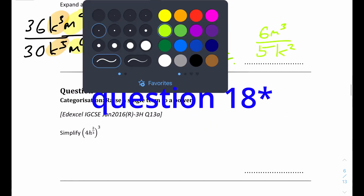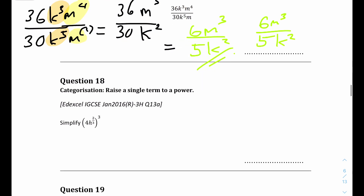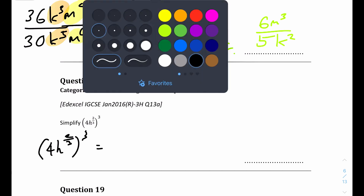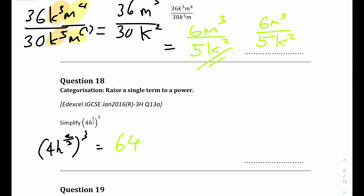Question 18: we have 4h to the power of 2 over 3, all cubed. We must apply the outer power to both the 4 and the h term. 4 cubed equals 64. For h to the power of 2 over 3, we multiply the powers: 2 over 3 times 3 equals 2. So the answer is 64h squared.